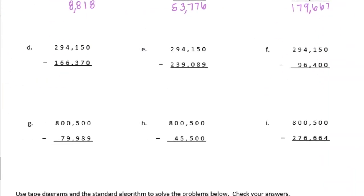D. 0 minus 0 is 0. 5 minus 7 we can't do. 15 minus 7 is 8. 0 minus 3 we need to borrow. 10 minus 3 is 7. 3 minus 6 — we need to borrow again. 13 minus 6 is 7. 8 minus 6 is 2. And 2 minus 1 is 1. 127,780.